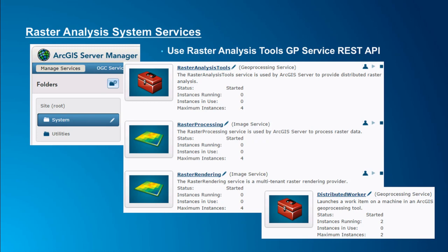Output imagery stored in CRF format is published as a special kind of image service with no ArcGIS Server sockets assigned. Instead, a Raster Rendering Service handles any rendering requests sent to image services generated by raster analysis. Additionally, a Distributed Worker Service processes global-type analysis specific to certain spatial analysis models. You can freely configure the maximum number of instances for these services based on your needs.